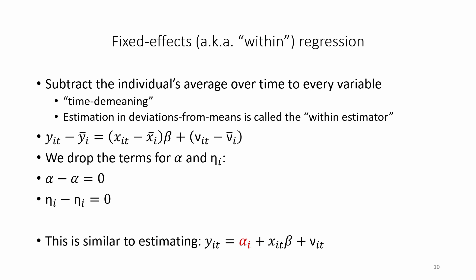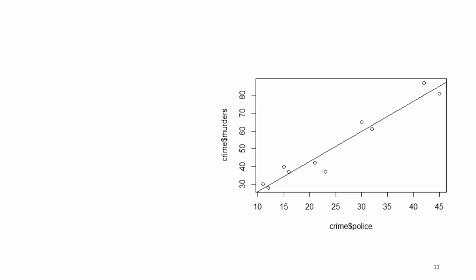Let me show you what I mean. Fixed effects regression is equivalent to estimating y_it equals alpha indexed by i plus x_it beta plus nu_it. As shown on the graph, each city has its own intercept, although the slope coefficient beta is the same for all cities.